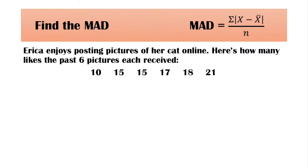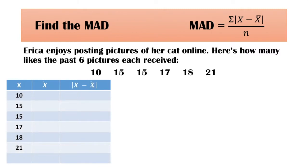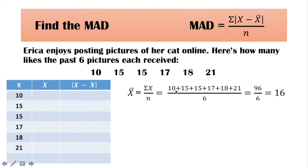Let us now find the mean absolute deviation, or MAD. In solving for the mean absolute deviation, it is better if you put the data in a table. The first step is to find the mean. In finding the mean, add all the numbers together and divide by N. N is 6, and this is 96 divided by 6, which is equal to 16.